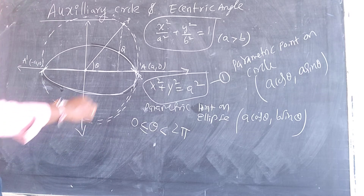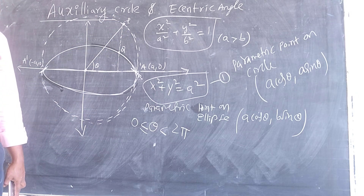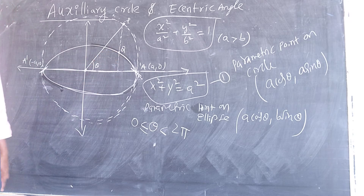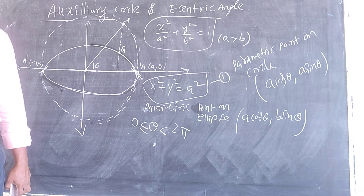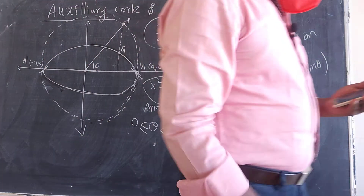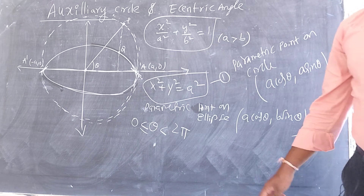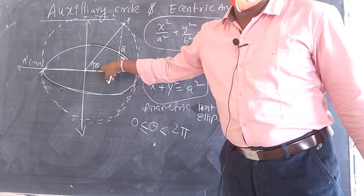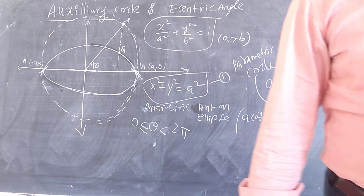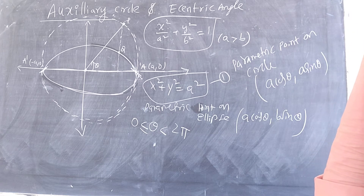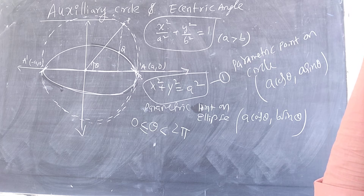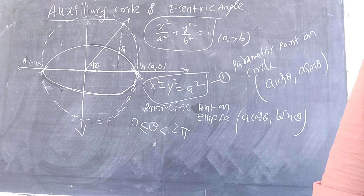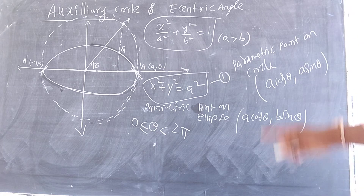Point P is called the parametric point on the circle, and point Q is called the parametric point on the ellipse. The eccentric angle is the angle made from the centre, and it lies between 0 and 2π, with 0 included.